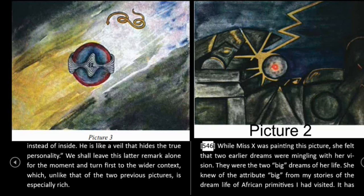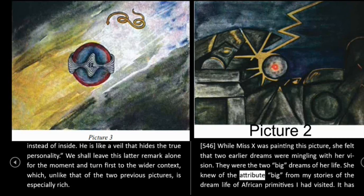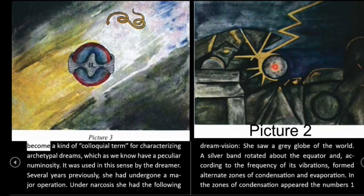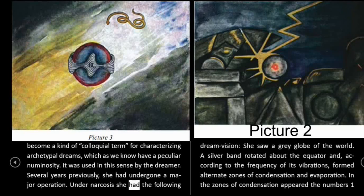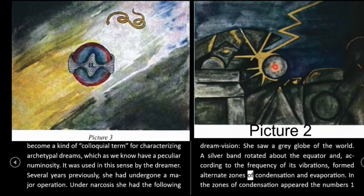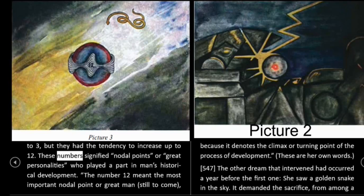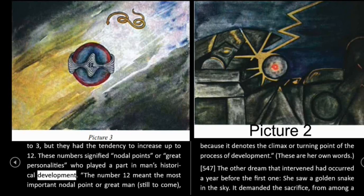546: While Miss X was painting this picture, she felt that two earlier dreams were mingling with her vision. They were the two big dreams of her life. She knew of the attribute 'big' from my stories of the dream life of African primitives I had visited. It has become a kind of colloquial term for characterizing archetypal dreams, which as we know have a peculiar numinosity. Several years previously, she had undergone a major operation. Under narcosis, she had the following dream vision: she saw a gray globe of the world. A silver band rotated about the equator and, according to the frequency of its vibrations, formed alternate zones of condensation and evaporation. In the zones of condensation appeared the numbers one to three, but they had the tendency to increase up to twelve. These numbers signified nodal points or great personalities who played a part in man's historical development. The number twelve meant the most important nodal point or great man still to come, because it denotes the climax or turning point of the process of development.